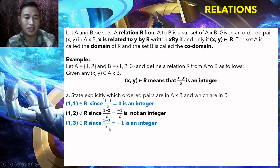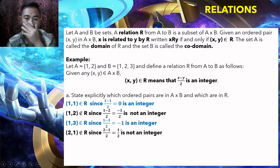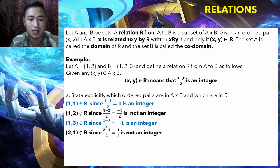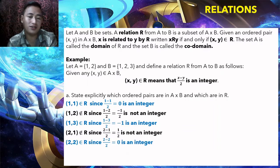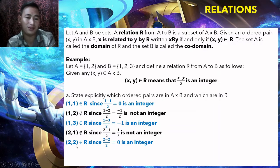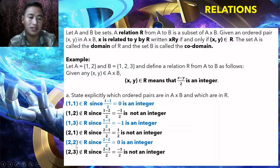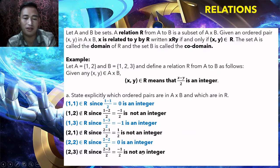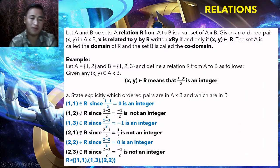For (1, 3): the result is −1, which is an integer — so it is in R. For (2, 1): the result is 1/2, which is not an integer — not in R. For (2, 2): the result is 0, which is an integer — so (2, 2) is in R. For (2, 3): the result is −1/2, which is not an integer — not in R. So the elements of R are: (1,1), (1,3), and (2,2) — only three pairs.